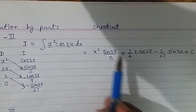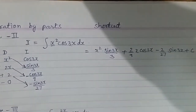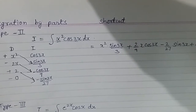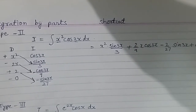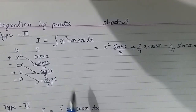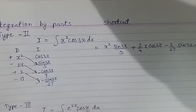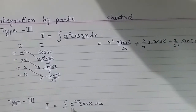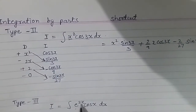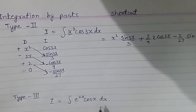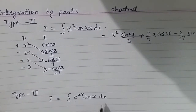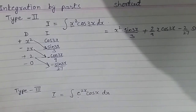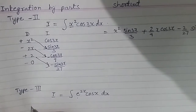Now I have another type of question. Instead of an algebraic function, I have an exponential: ∫e^(2x) cos x dx. I will solve this by the same DI method.